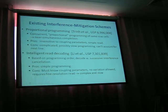Two major directions are considered. The first one is proportional programming, which uses concurrent proportional programming of the same row cells to a simultaneous equation. The other one is intelligent decoding, which is based on the programming order. It decodes with successive interference cancellation.